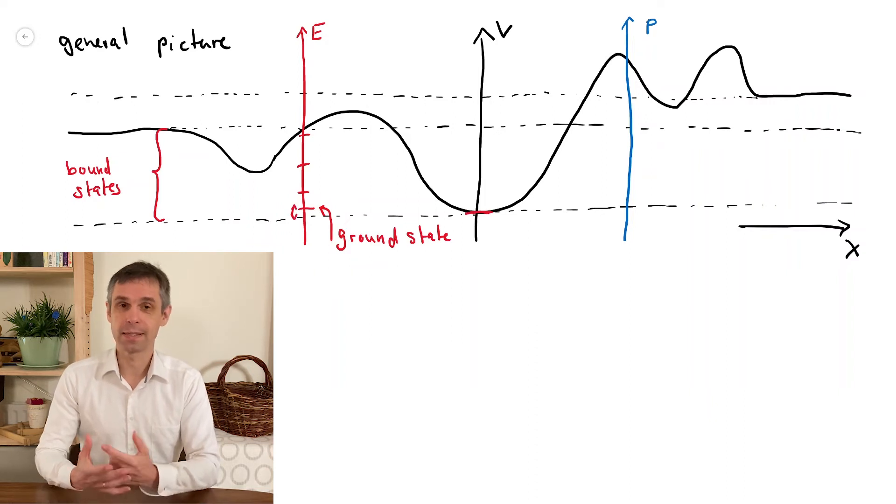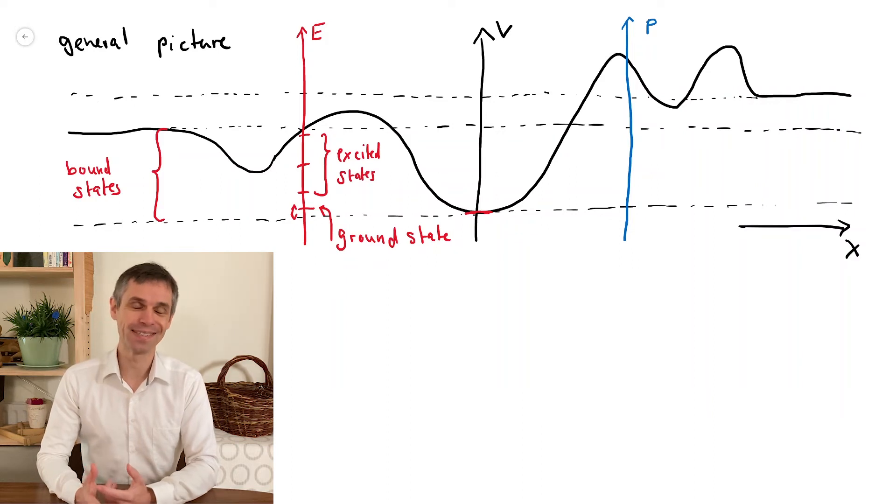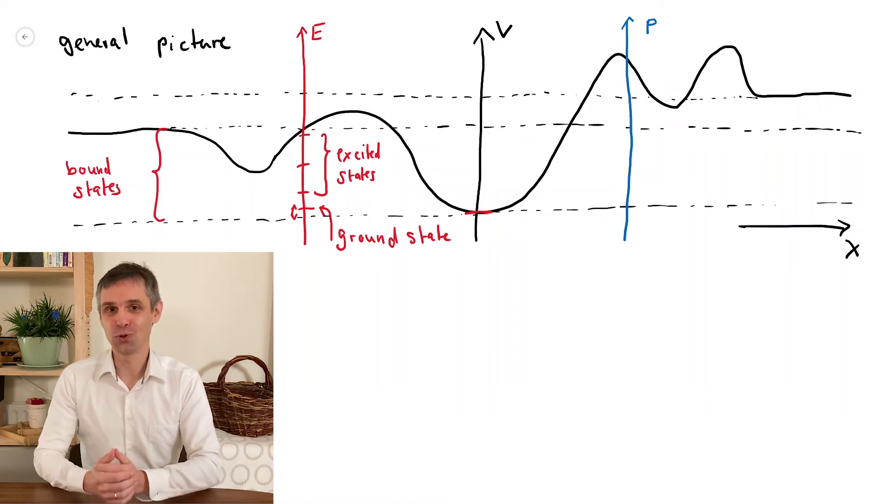And above this, you find the excited states that also have discrete energies and wave functions that decay at very large distances. So these bound states are the solutions of the Schrödinger equation where we then can take the wave function and convert it into a properly normalized probability density.